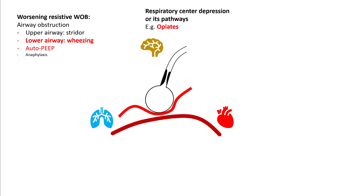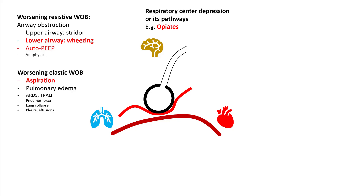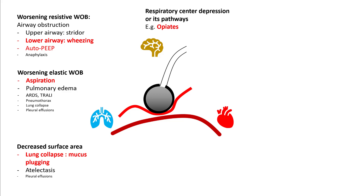In the pulmonary causes, there can be increased resistive work of breathing — for example, in airway obstruction. You can have increased elastic work of breathing, for example seen in aspiration, pulmonary edema, ARDS, pneumothorax, etc. Or you can have decreased surface area — for example, massive atelectasis or lobar collapse from mucus plugging.